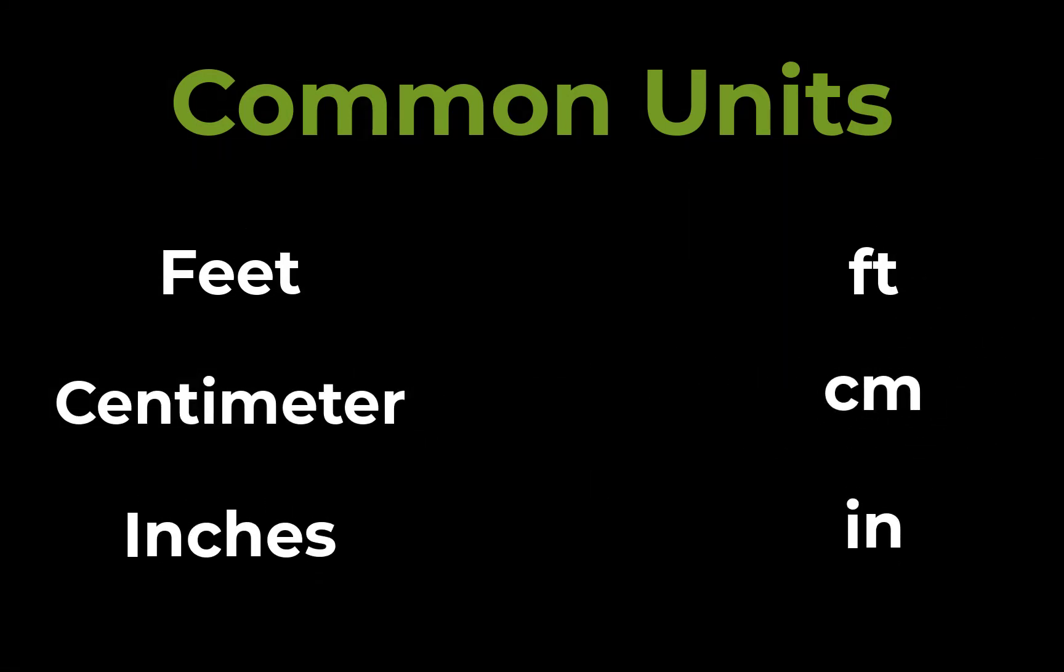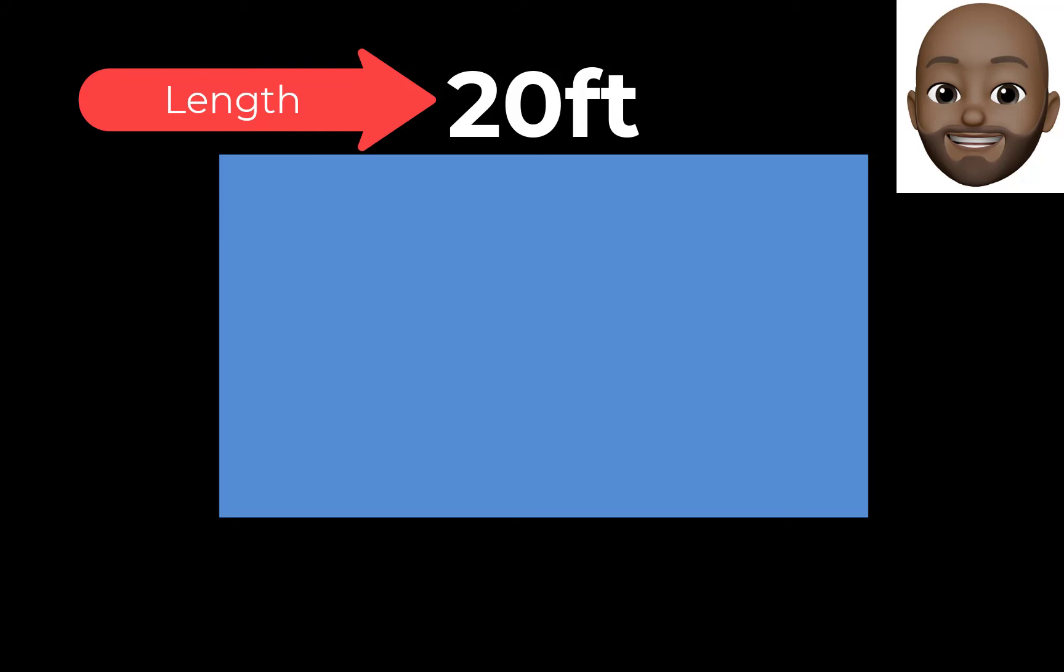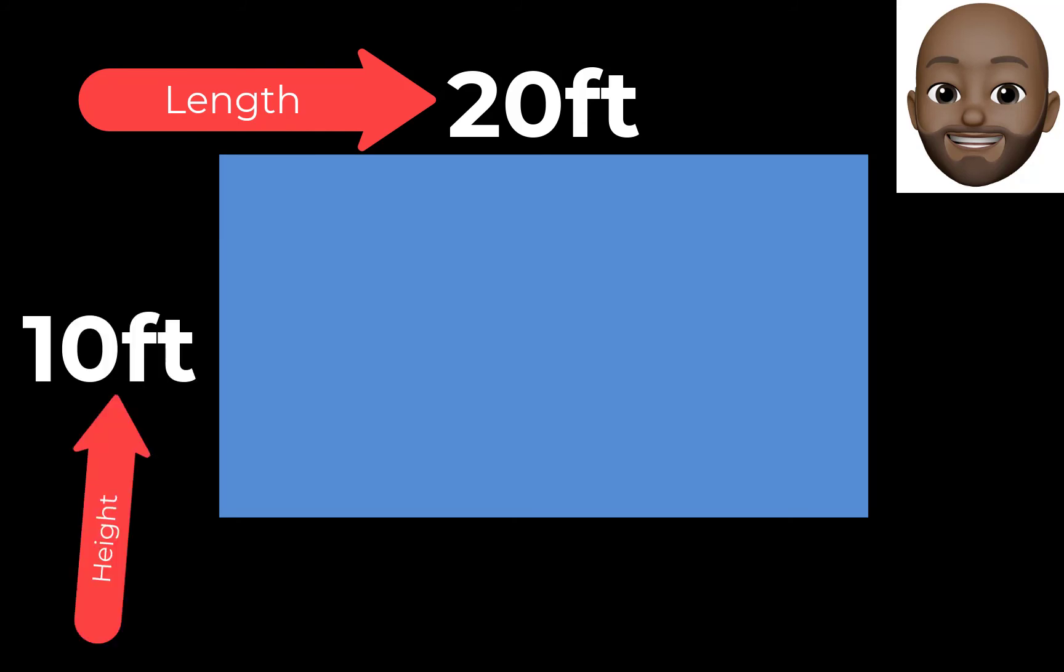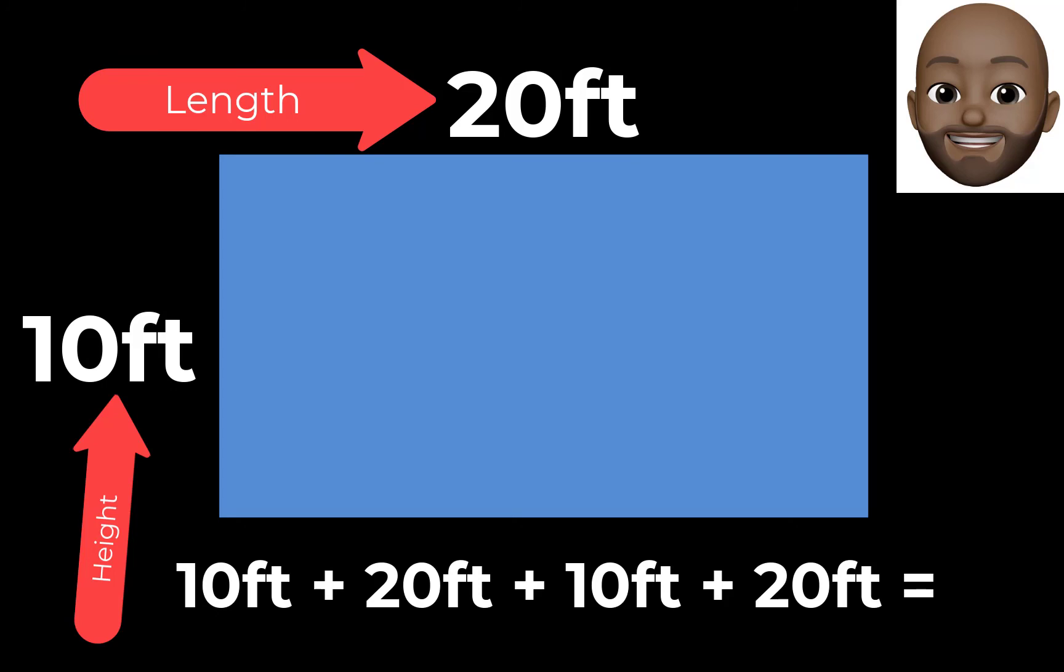To express your answer using any one of these units is easy. For example, our previous rectangle has a length of 20 feet and a height of 10 feet. To find the perimeter, simply add all the sides and the answer will be 60 feet.